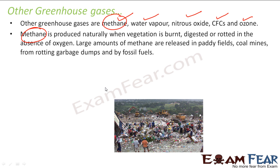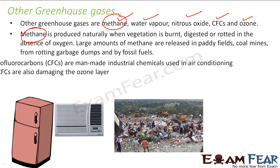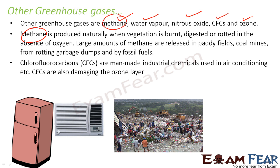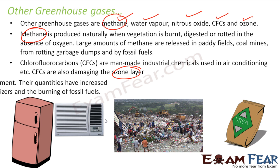Talking about methane — it is generally produced naturally when you burn vegetation, or from garbage, fossil fuels from coal mines, and paddy fields. CFCs are used in air conditioners and fridges, and they also cause depletion of the ozone layer — we will talk about these in the next few slides. And then we have nitrous oxide, produced because of the increased use of fertilizers in soils and also from the burning of fossil fuels.